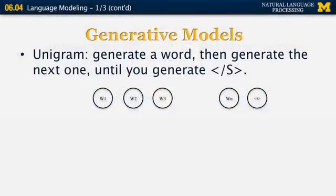One thing you need to know about n-gram models is that they can be considered to be generative models. We can look at the unigram model first. The algorithm is very straightforward. You generate a word from the distribution of unigrams, then you generate the next one, and then you stop when you generate the end of sentence symbol slash s. This is essentially what a unigram model looks like.